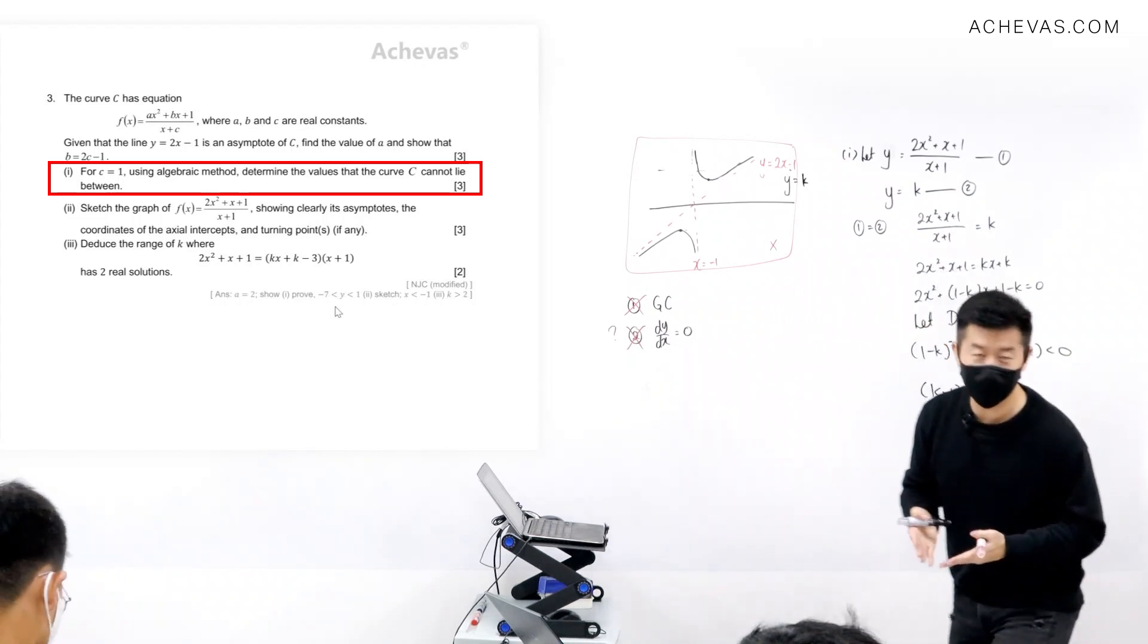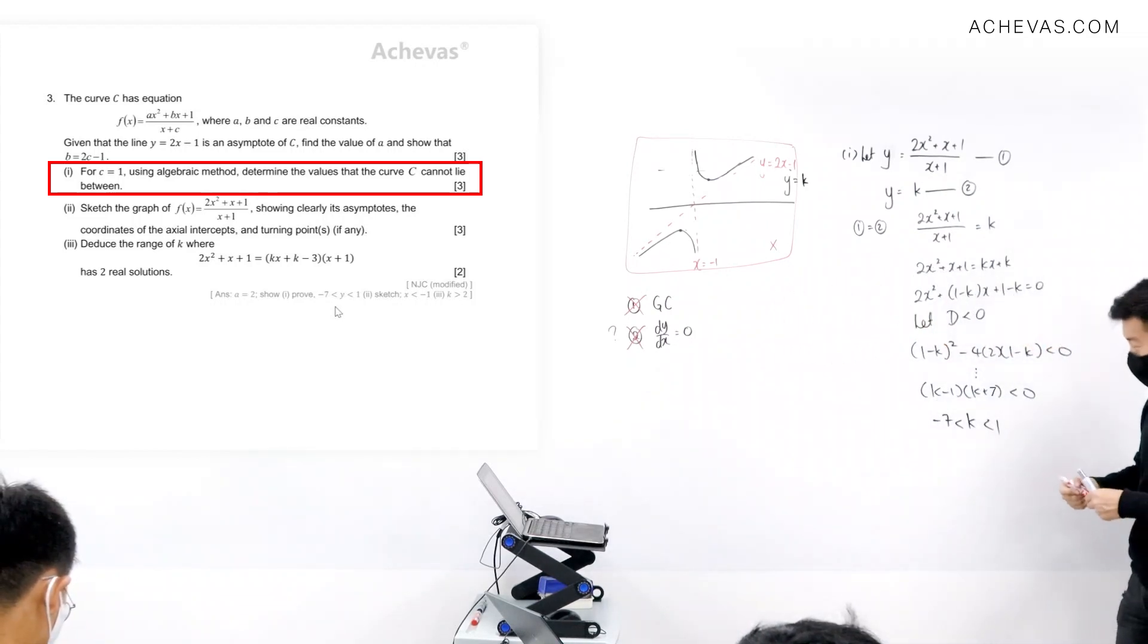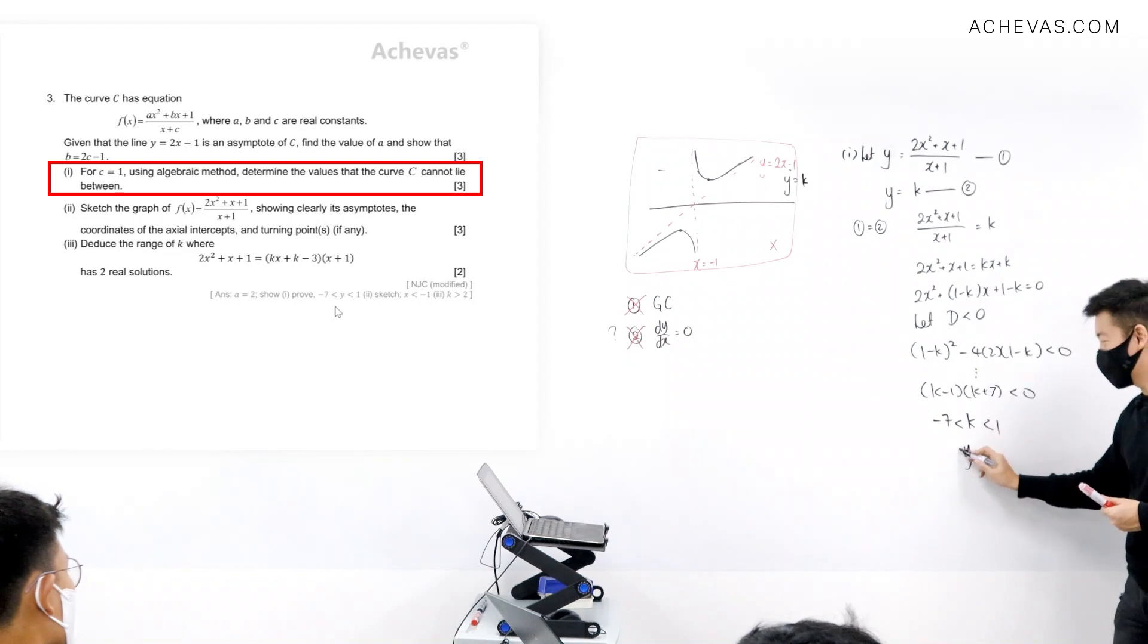k represents y. It is a horizontal line. k represents y. That means y is supposed to be between minus 7 and 1.